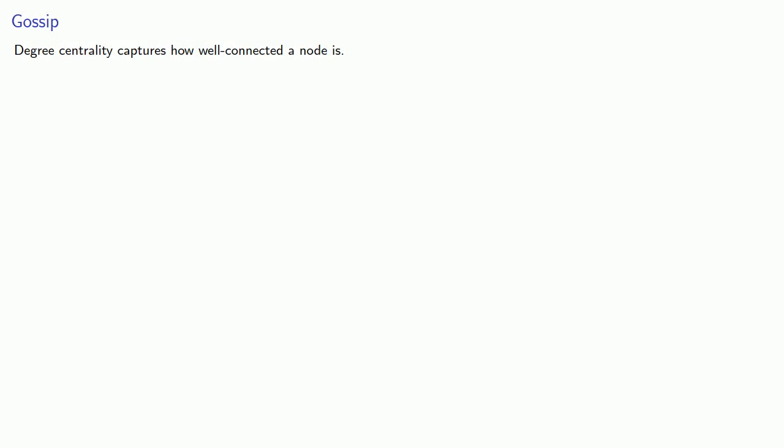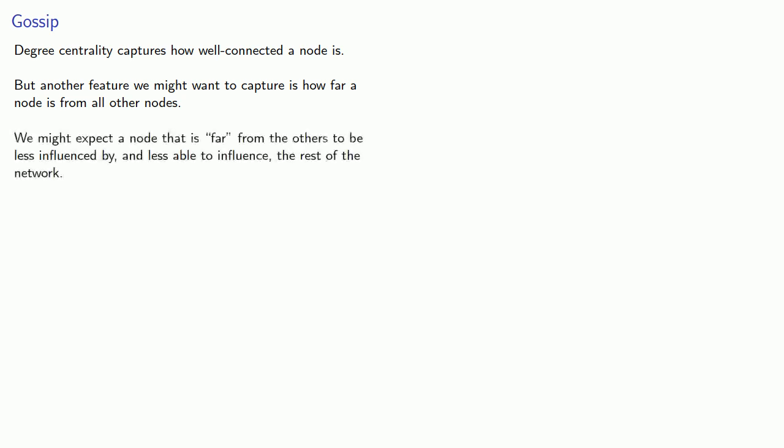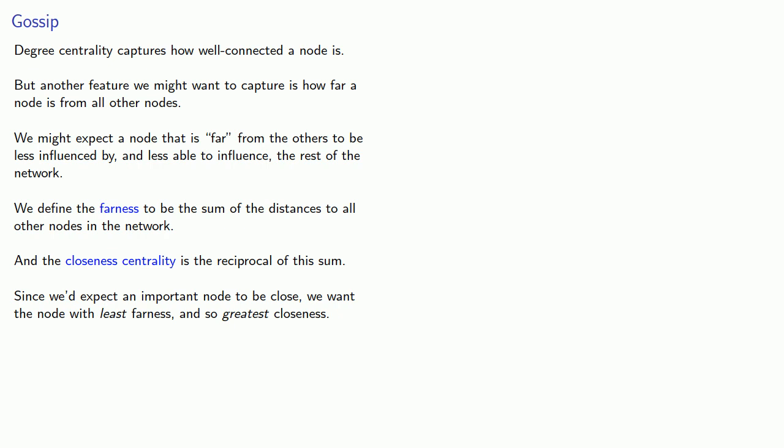Degree centrality captures how well connected a node is. But another feature we might want to capture is how far a node is from all other nodes. We might expect a node that is far from the others to be less influenced by and less able to influence the rest of the network. So we define the farness to be the sum of the distances to all other nodes in the network. And we'll define the closeness centrality to be the reciprocal of this sum. Since we'd expect an important node to be close, we want the node with the least farness and so the greatest closeness.